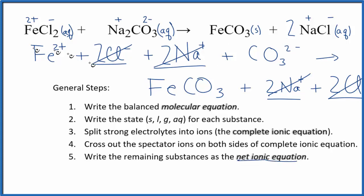And this is the net ionic equation for FeCl2 plus Na2CO3. So we have our iron 2 ion, our carbonate ion, and then our solid iron 2 carbonate. Let me clean this up a bit, and then we'll come back with a nice tidy net ionic equation.